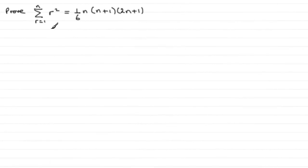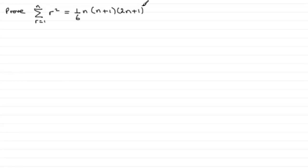This is a very common series that we have to prove by induction, so we should certainly learn this process. We've got to prove that the sum of r squared going from r equals 1 to n equals one sixth n multiplied by n plus 1 multiplied by 2n plus 1. To do this, all we need to do is check that it works for n equals 1 first of all.